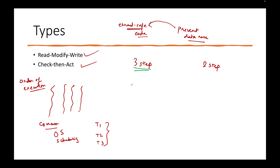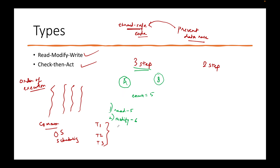The Read-Modify-Write is a three-step process. Let's take an example: you have two threads, Thread A and Thread B, both trying to modify a common counter. The variable is currently 5. When both threads start, the first step is to read the value — Thread A reads the value as 5. Step two is to modify: it will do count++ which is 5 + 1 = 6. The third step is to write.